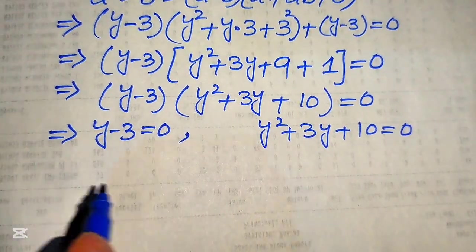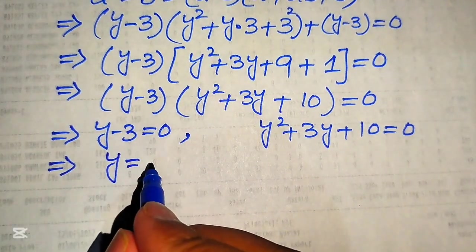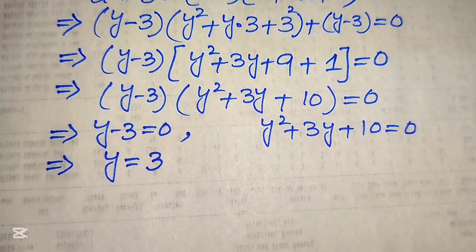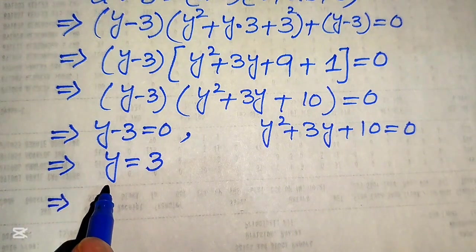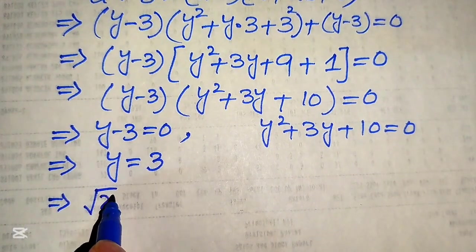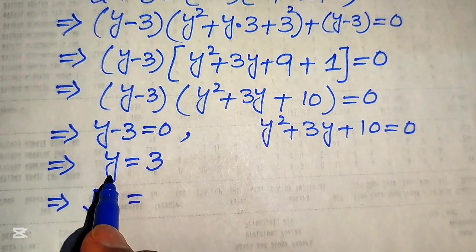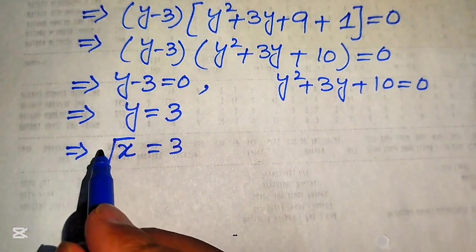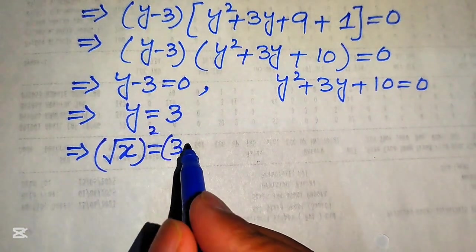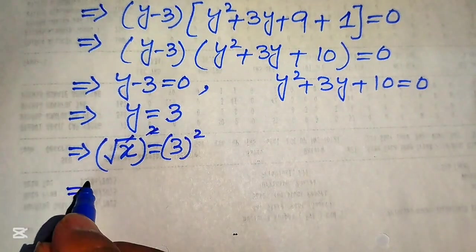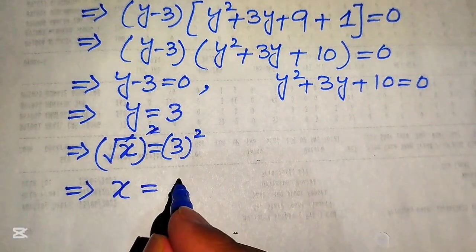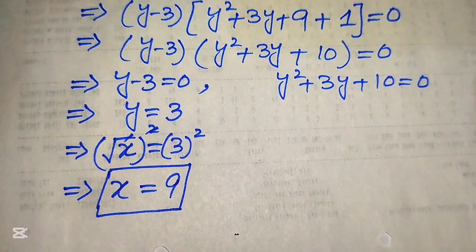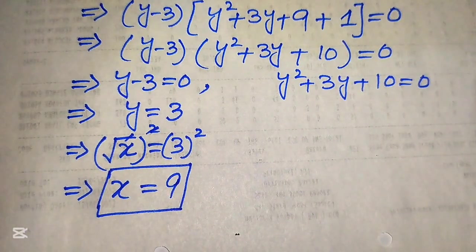From Case 1, y − 3 = 0, we get y = 3. Back-substituting using y = √x, we have √x = 3. Squaring both sides, the square root is eliminated and we get x = 3² = 9. This is the first real value of x.